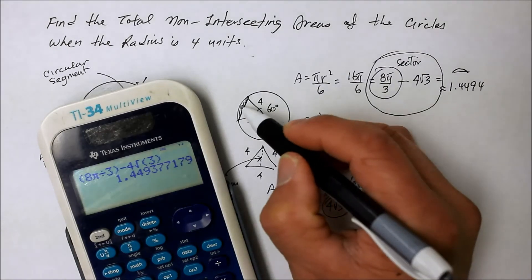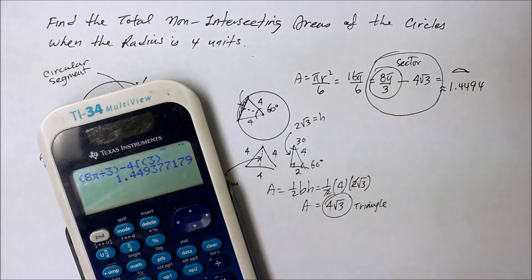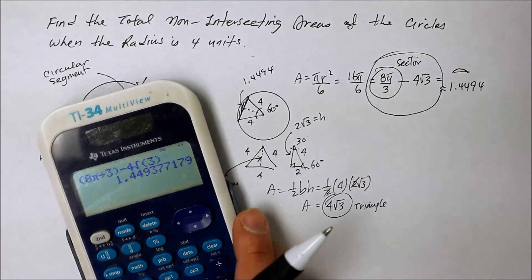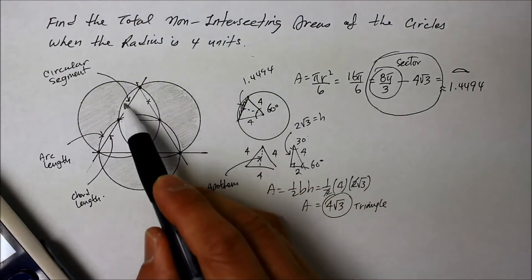And that would be about the value of 1.449, something like that. Okay? And that represents that little circular segment right there. 1.4494, something like that. Alright? And that right there is that little portion right there. Okay?